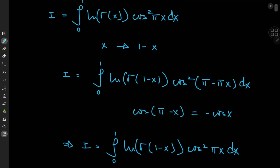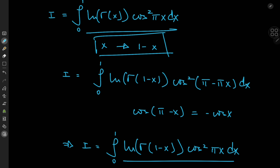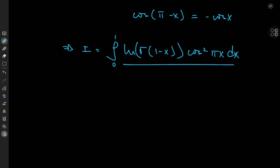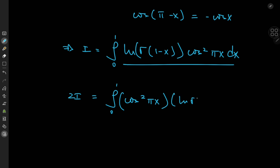The motivation behind this transformation of x to 1 minus x is that now we have the log gamma x term from the original integral and this log gamma 1 minus x term from the transformed one. So if we combine the two integrals, we'll get a really nice structure. Adding up the two forms for i, we have 2i equal to the integral from 0 to 1, factoring out the cosine squared pi x term, of log gamma x plus log gamma 1 minus x dx.